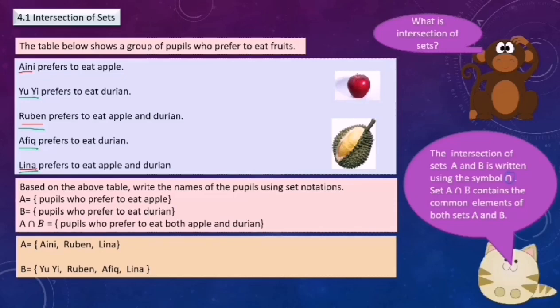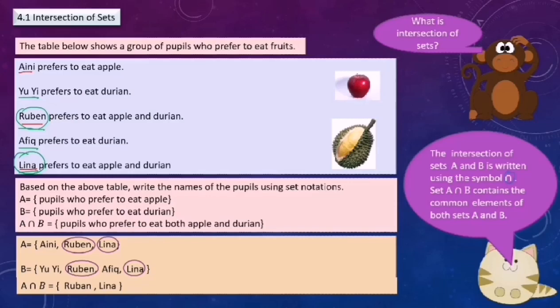A intersect B means pupils who prefer to eat both apple and durian. So pupils who prefer to eat both apple and durian are Ruben and Lina. The intersection of set A and set B contains common elements that are Ruben and Lina, who prefer to eat both apple and durian.